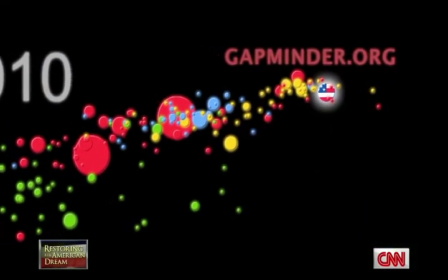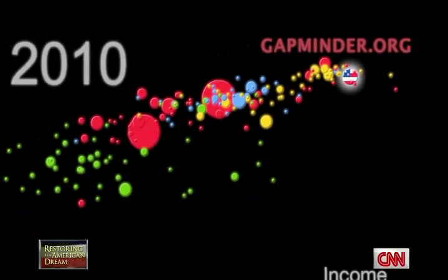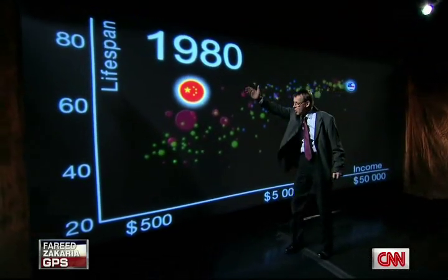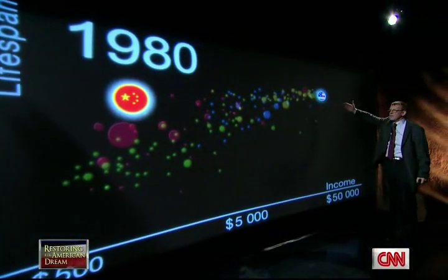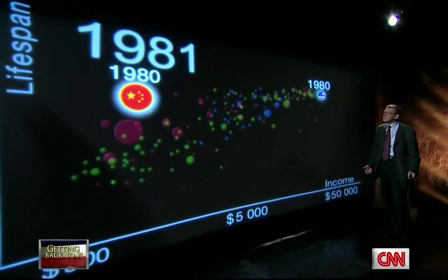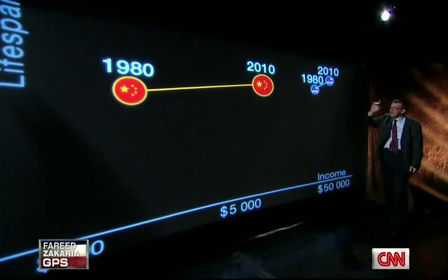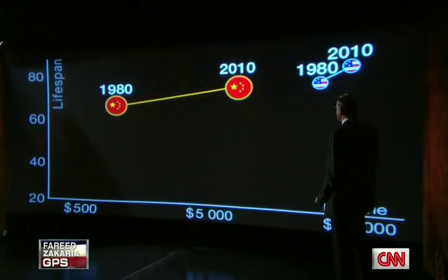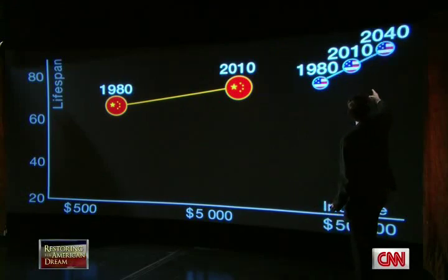And how will this continue? Let's make a projection into the future by going backwards first. This is where China was in 1980 — they had very low income over there, and the US was all the way at the other end. We never thought this would happen: that China in 30 years would move so much faster than the United States. Now, if both countries kept the same speed in economic growth in the coming 30 years, where would the US end up? It would end up there.